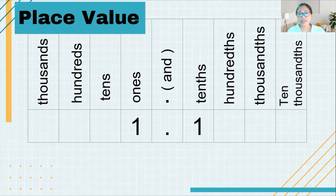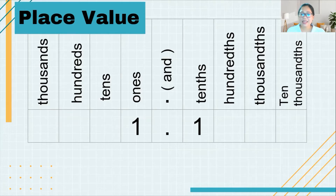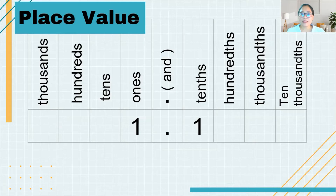Now let's talk about the numbers after the decimal point — what do we call these place values? After the decimal point, we call the first number tenths. The next number after tenths, we call it hundredths. Next, the third number is called thousandths. And then next, we have ten-thousandths. As you can see, the numbers on the right side end with the letters T-H-S, so please be careful when you pronounce them in order to say the place value correctly.